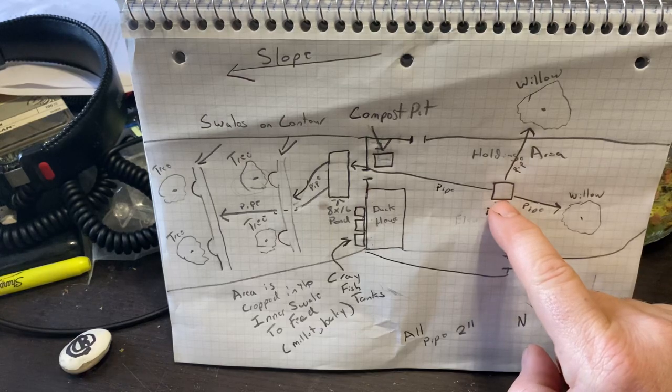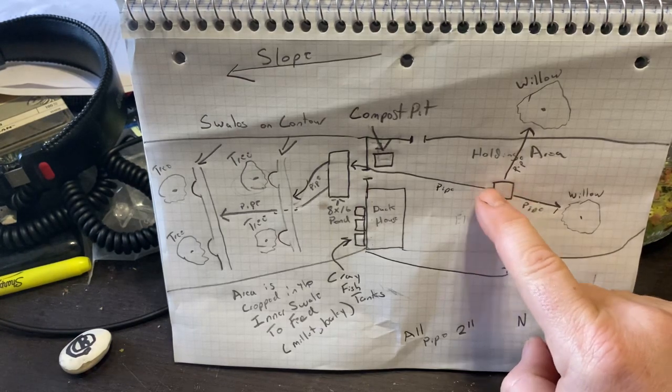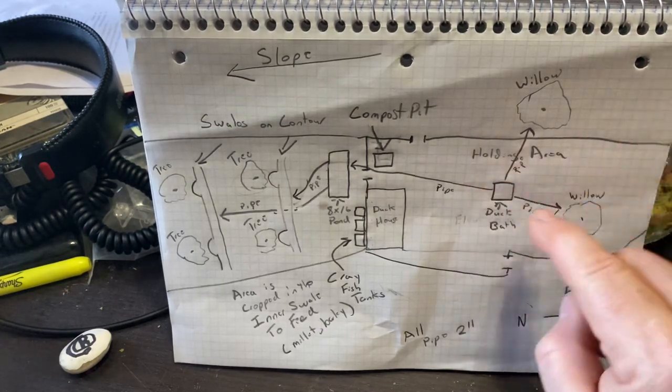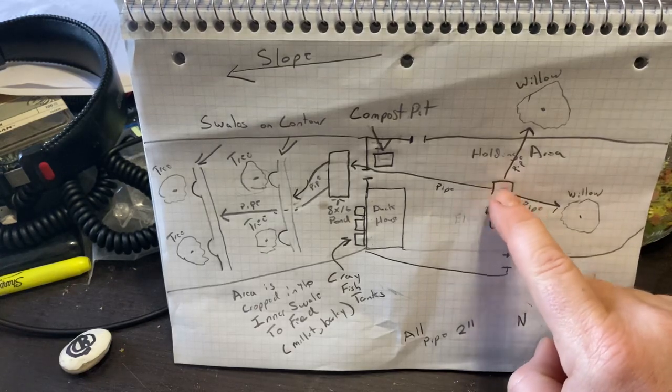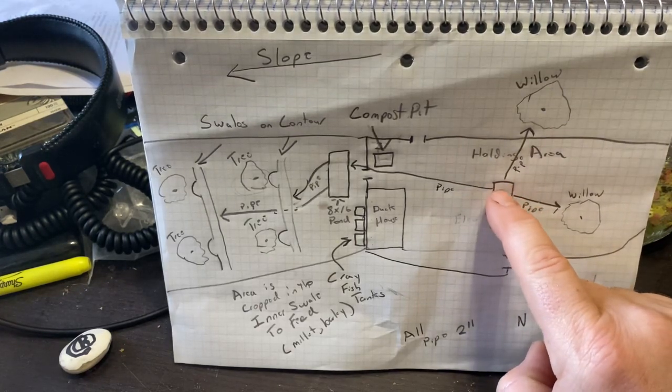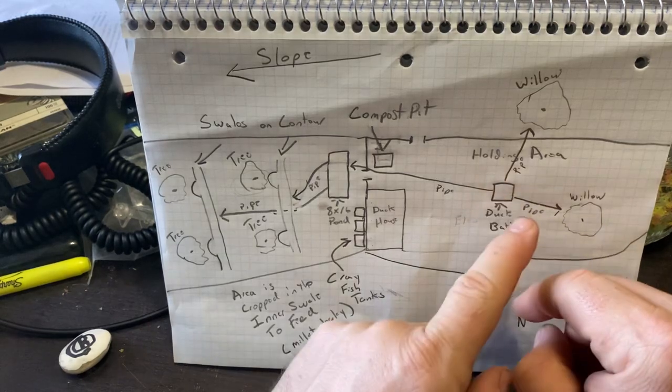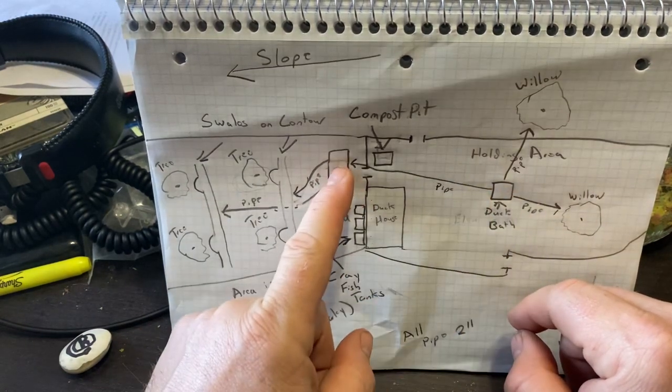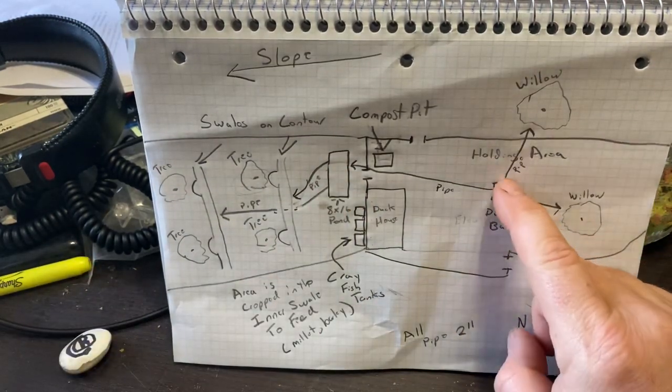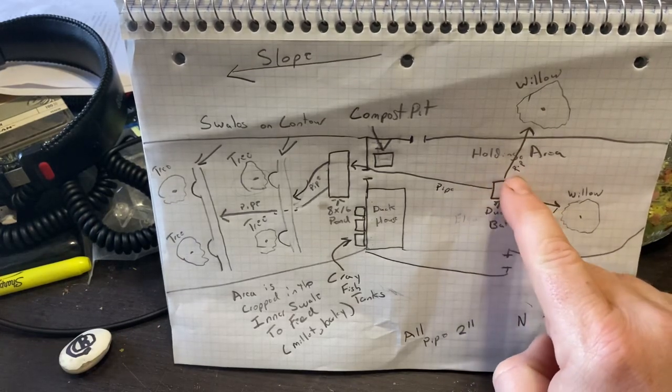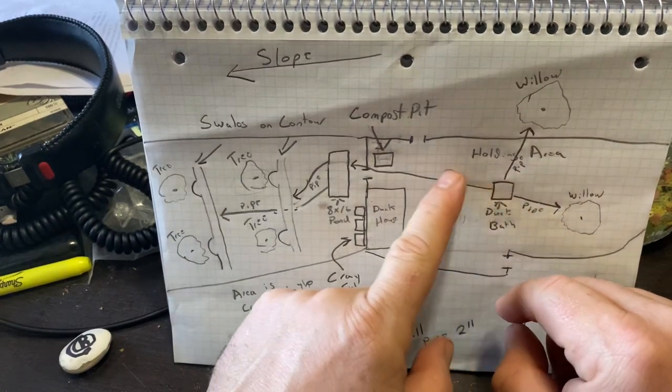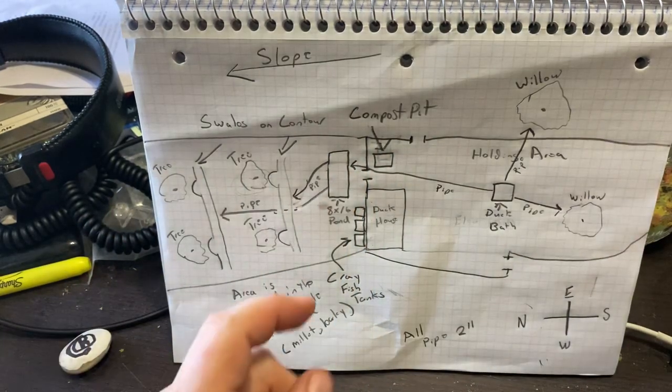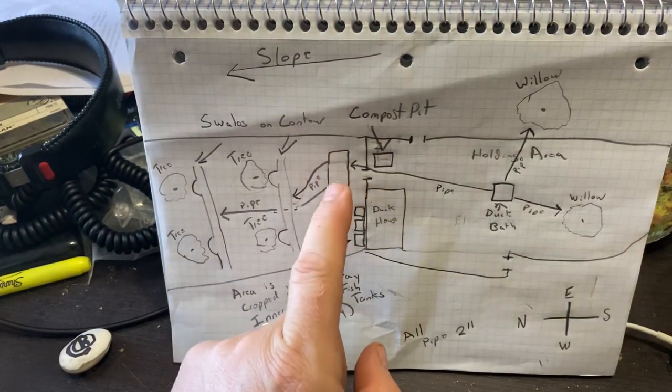So up here will be a roughly 55 gallon container of water. I'll talk about what it's being made out of when I walk you through the project outside. It's going to sit here slightly elevated—I'll show you how I'm going to do that outside. Just understand it's high enough that water, when you open a drain, will be able to drain from here to your pond.